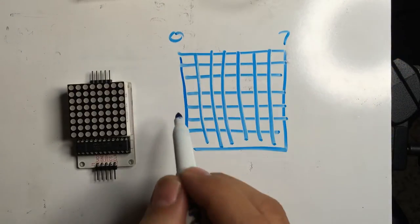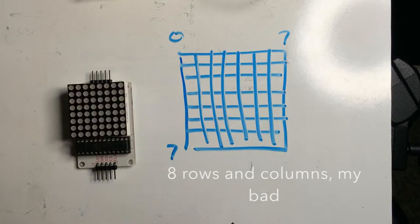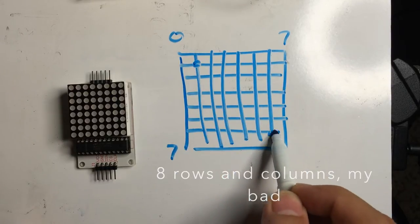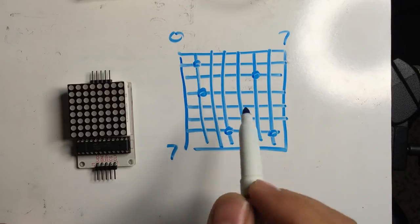So 7 rows and 7 columns, and then where these rows and columns meet is where an LED is. The MAX7219 and the library LED control are what make this possible and make this project actually pretty simple.